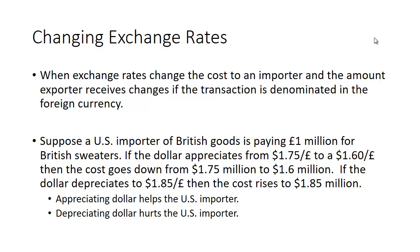So costs go down — that's a good thing. If the dollar depreciates so that it takes more US dollars to buy a pound, the cost rises to $1.85 million. An appreciating dollar — the dollar becoming more valuable — is good for the US importer, while a depreciating dollar hurts the US importer.